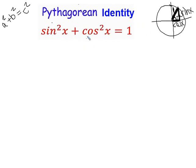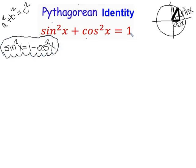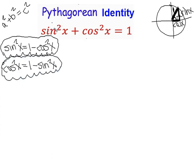We can rearrange the main Pythagorean identity to get a few more. Subtracting cosine squared x from both sides gives us sine² x = 1 − cos² x. Similarly, subtracting sine squared x gives us cosine² x = 1 − sin² x. These are still valid identities — just the original one rewritten in different forms.